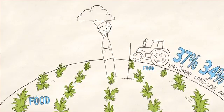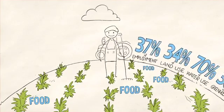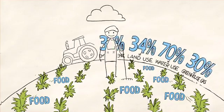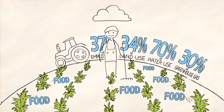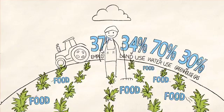Around the world, agriculture accounts for 37% of employment, 34% of land use, 70% of water use and up to 30% of greenhouse gas emissions.